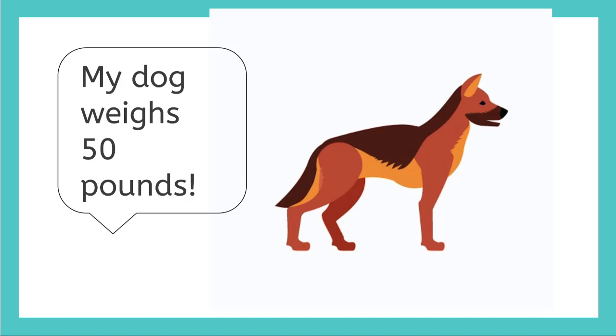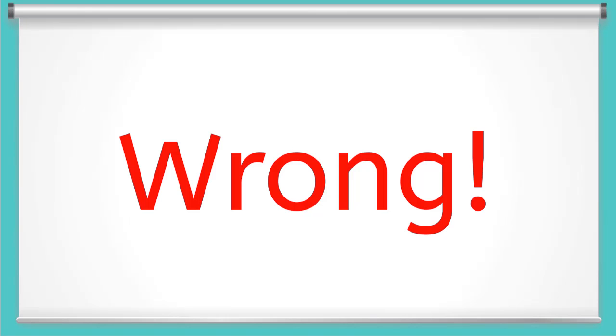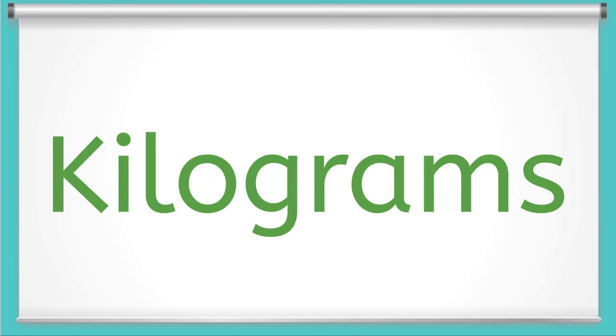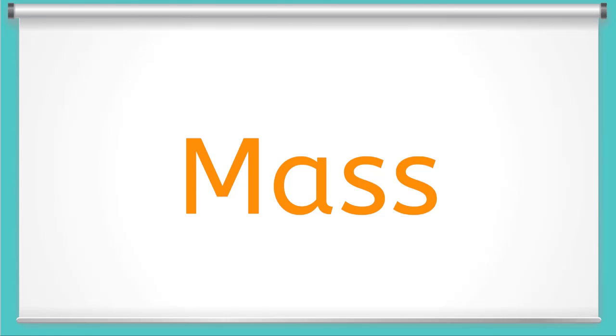Or say, this dog weighs 50 pounds. But this is actually wrong. When we say something is in pounds, or as a scientist, in kilograms, what we're really saying is how much mass something has.